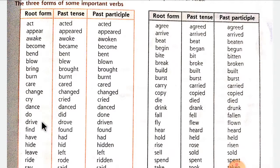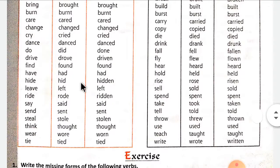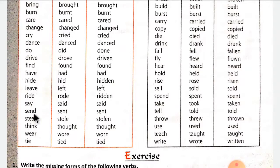Drive means 'gaadi chalana' (to drive) — drove — driven. Find means 'paana' or 'khojana' (to find) — found — found. Have means 'rakhna' — had — had. Hide means 'chupana' (to hide) — hid — hidden. Leave means 'chhodna' (to leave) — left — left. Ride means 'sawari karna' (to ride) — rode — ridden. Say means 'kehna' (to say) — said — said. Send means 'bhejna' (to send) — sent — sent. Steal means 'churana' (to steal) — stole — stolen. Think means 'sochna' (to think) — thought — thought. Wear means 'pehna' (to wear) — wore — worn. Tie means 'bandhna' (to tie) — tied — tied.